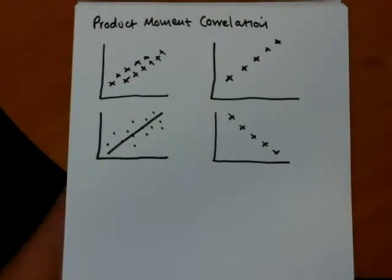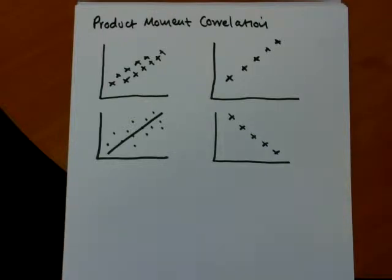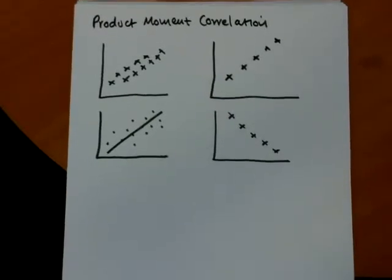Let's look at the product moment correlation coefficient. At GCSE you're used to doing correlation, you're used to doing scatter diagrams and drawing in a line of best fit and saying whether there was positive correlation, no correlation or negative correlation.